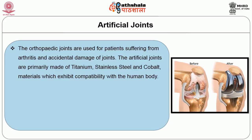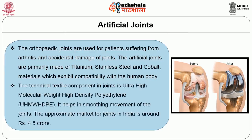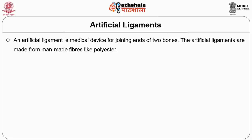Orthopedic joints are used for patients suffering from arthritis and accidental damage of joints. The artificial joints are primarily made out of titanium, stainless steel, and cobalt material, which exhibit compatibility with the human body. The technical textile component in joints is ultra high molecular weight high-density polyethylene, which helps to smoothen the movements of joints. The approximate market for these joints in India is around Rs. 4.5 crores.